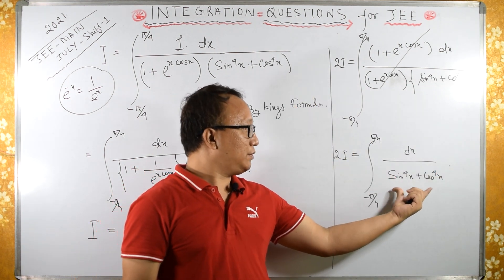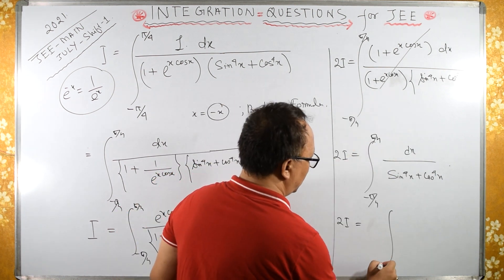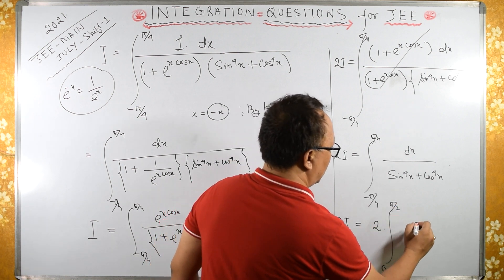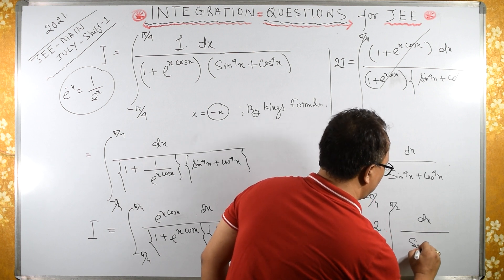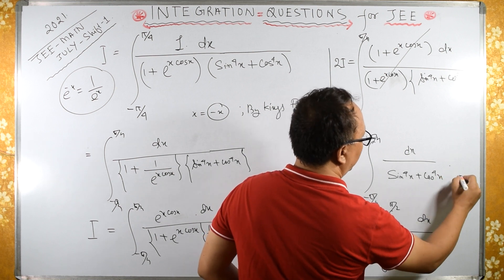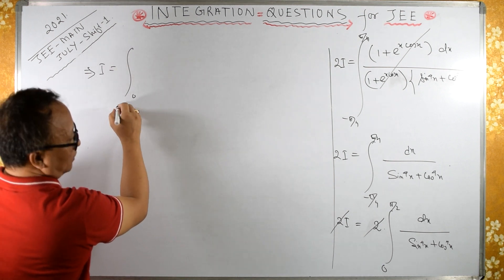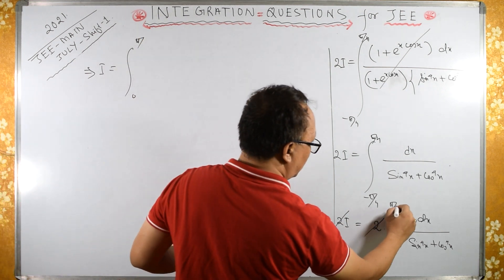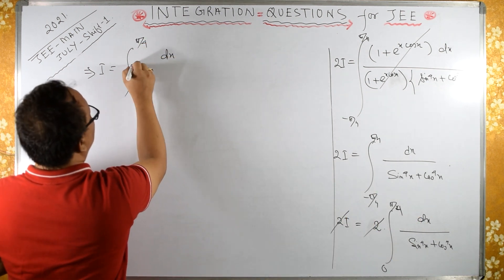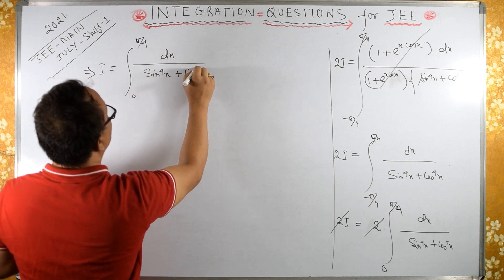Now this integrand is an even function. Since it is an even function, I can change the limits: 2I equals 2 times the integral from 0 to π/4 of dx upon (sin⁴x plus cos⁴x). Cancelling the 2 on both sides, I equals the integral from 0 to π/4 of dx upon (sin⁴x plus cos⁴x).